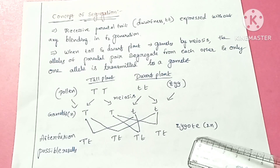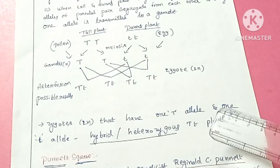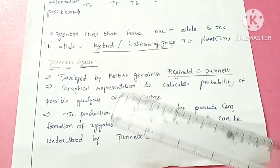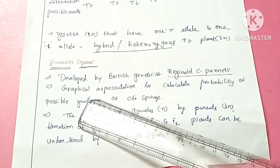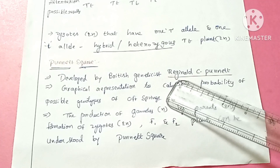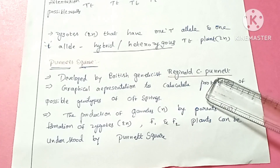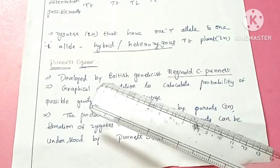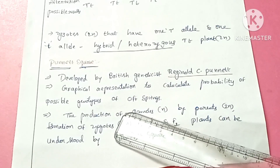This is called the concept of segregation. The next concept is the Punnett square. What is the Punnett square and who developed it? The Punnett square was developed by the British geneticist Reginald C. Punnett.